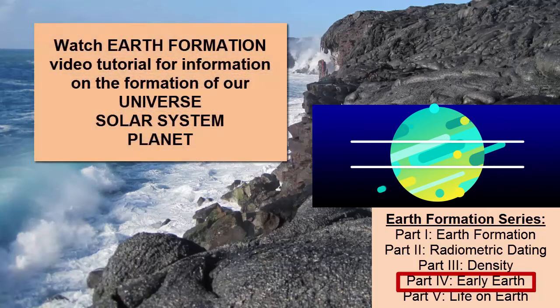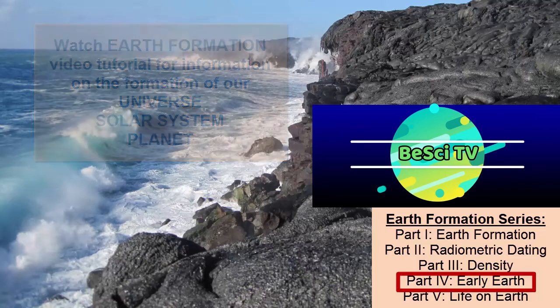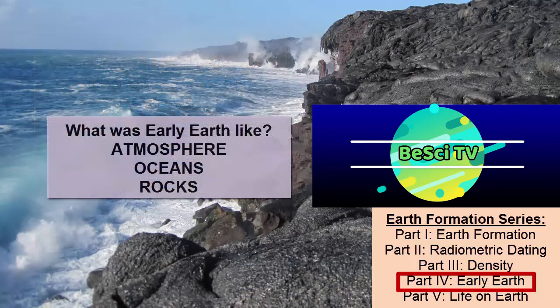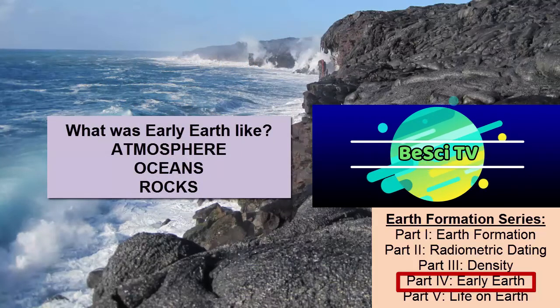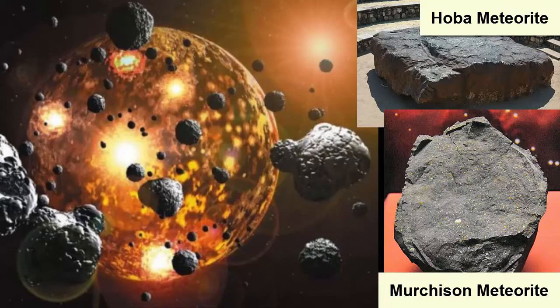After having watched the Earth Formation video tutorial, we now have an understanding of how our universe, solar system, and planet formed. But what was early Earth like? How did the rocks we see on the surface form? The atmosphere? The oceans? Since the Earth formed through the collision and accretion of meteorites, studying what meteorites are made of helps us learn what our planet is made of.